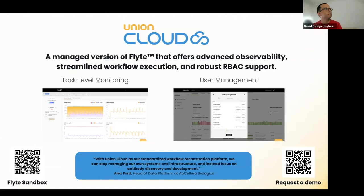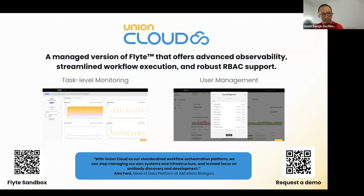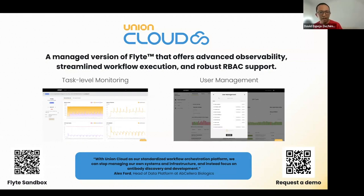Before we start, I want to say thanks to Union AI for sponsoring all the Flyte School sessions. Union AI is the company behind Union Cloud, a platform that provides a managed version of Flyte, where you get some of the most demanded features in terms of enterprise readiness — like task-level observability, monitoring, and role-based access control, among others. And you certainly don't have to deal with Kubernetes there. But if you're here, I'm glad you want to know how things work. Kudos to Union AI.